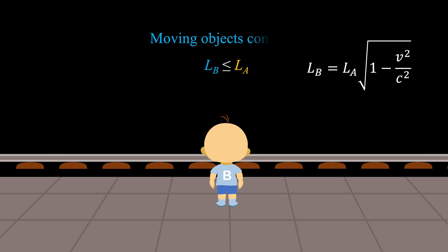Thus, moving objects contract, a phenomenon known as length contraction. This demonstrates that spatial distances, like time, depend on the observer's motion.